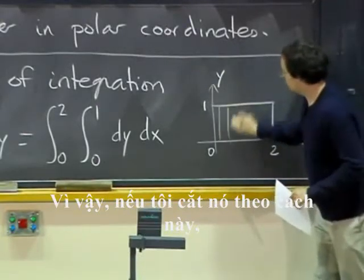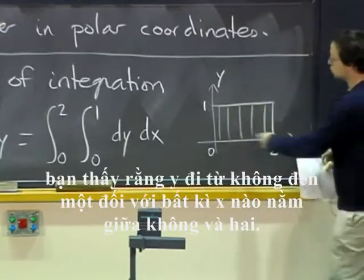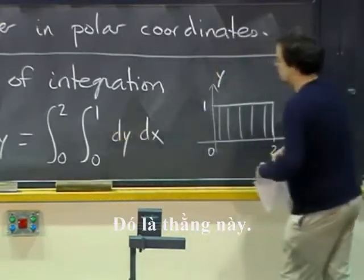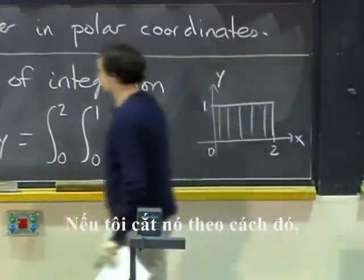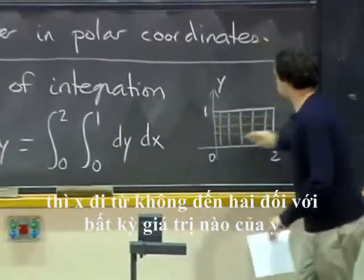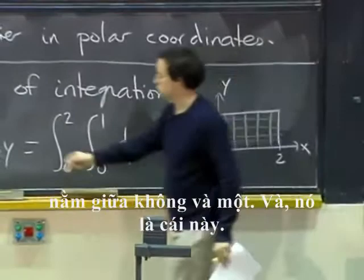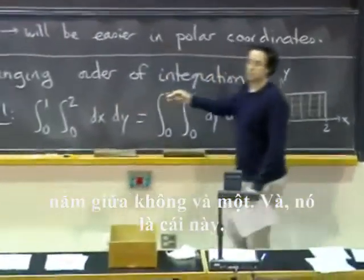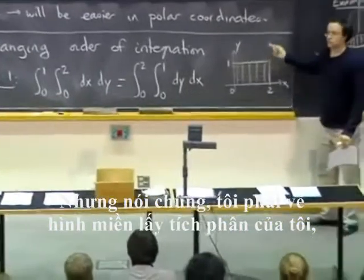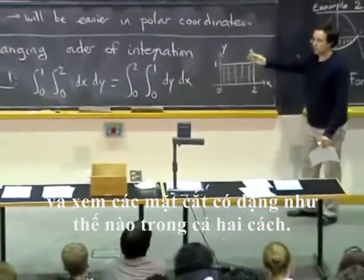So if I slice it this way, you see that y goes from zero to one for any x between zero and two. It is this guy. If I slice it that way, then x goes from zero to two for any value of y between zero and one, and it is this one. So here it works. But in general, I have to draw a picture of my region and see how the slices look like both ways.